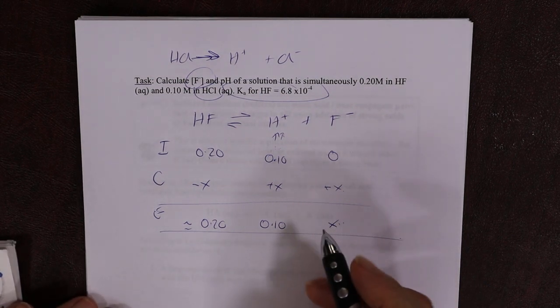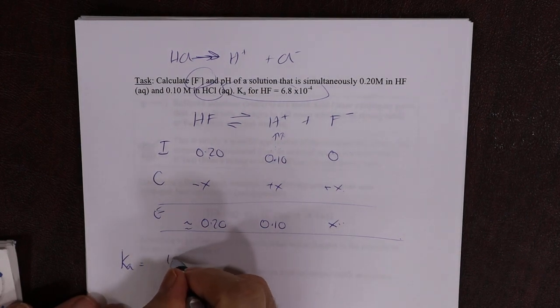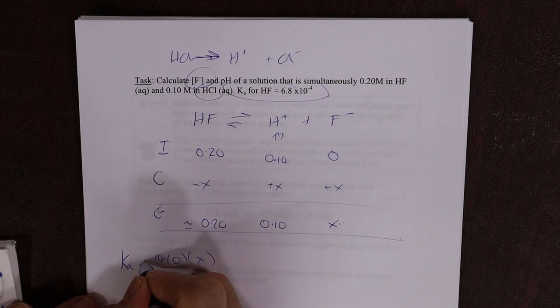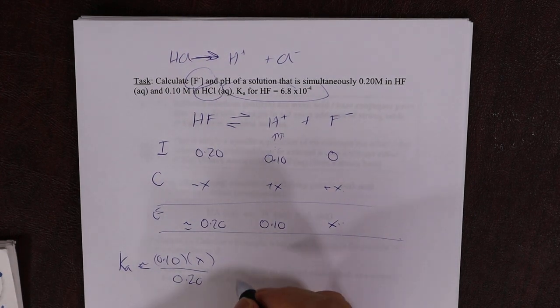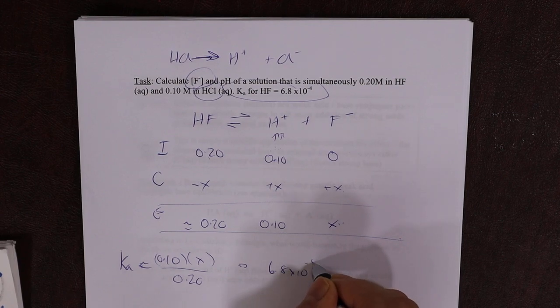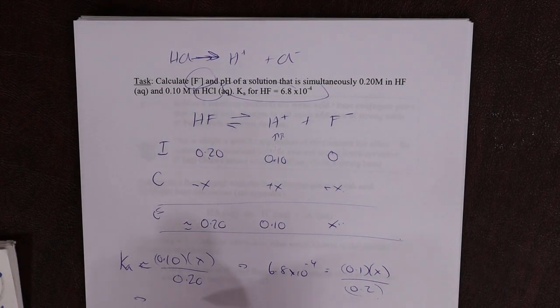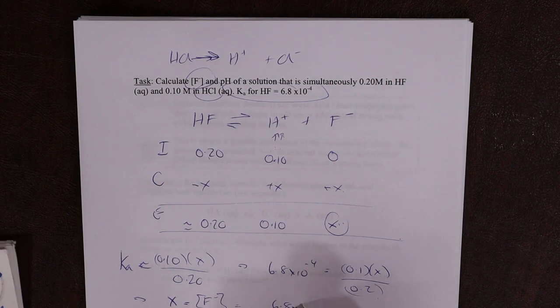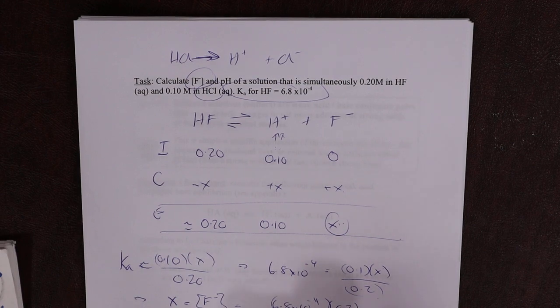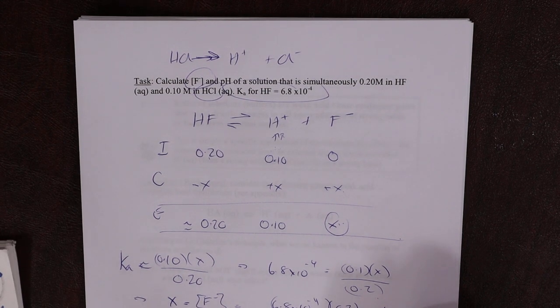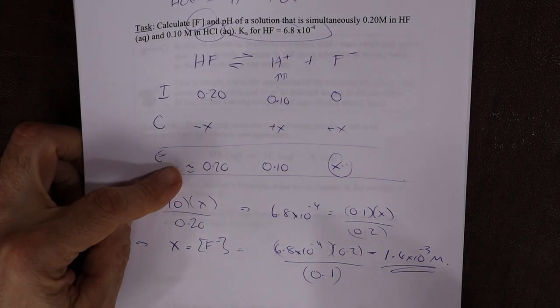Ka equals products, 0.1 times X over 0.2. Therefore, 6.8 times 10 to the minus 4 equals 0.1X over 0.2. Therefore, X, which equals F minus, equals 6.8 times 10 to the minus 4 times 0.2 over 0.1, which equals 1.4 times 10 to the minus 3 molar. Yes, that's what we got.